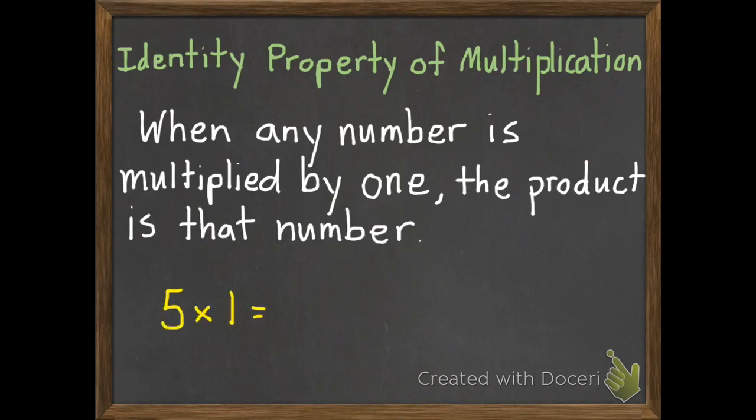For example, 5 times 1 equals 5. So if 5 is multiplied by 1, the product is 5. Or if 8 is multiplied by 1, the product is 8. So any number multiplied by 1, the product will be that number.